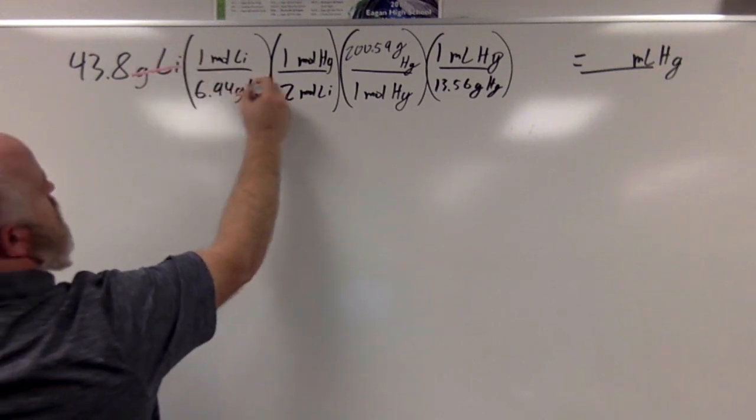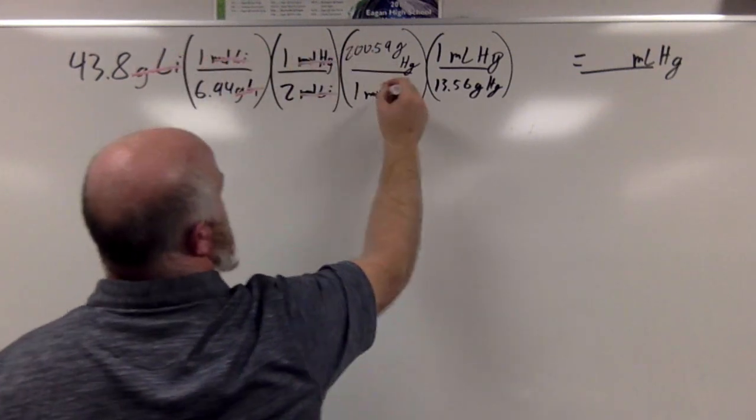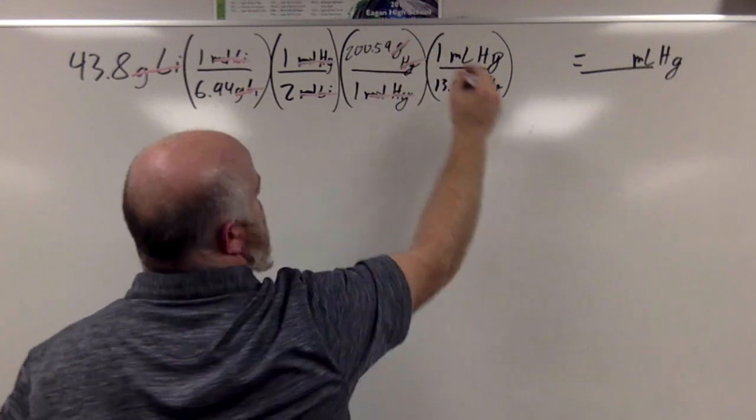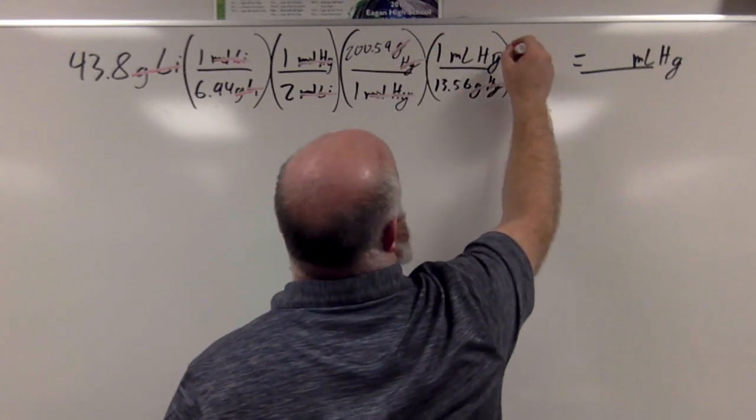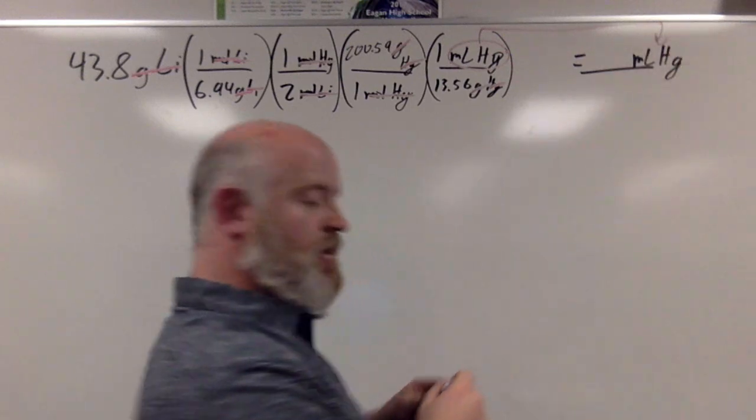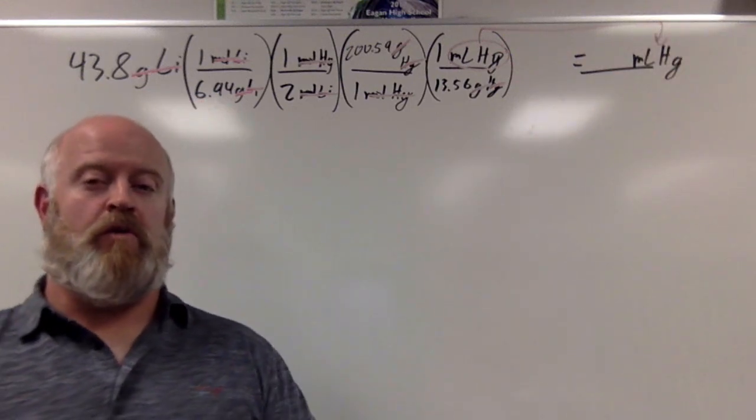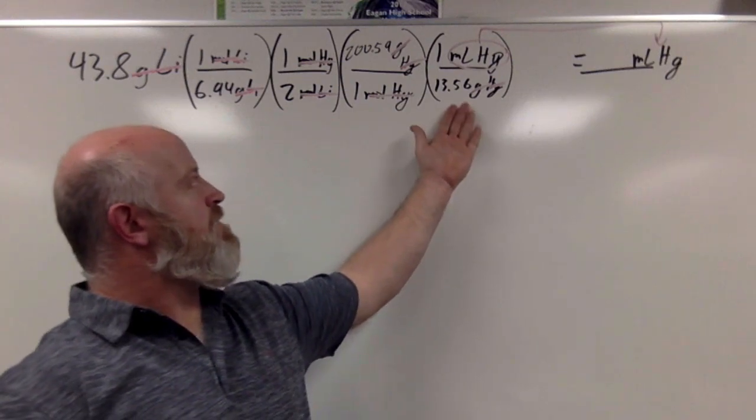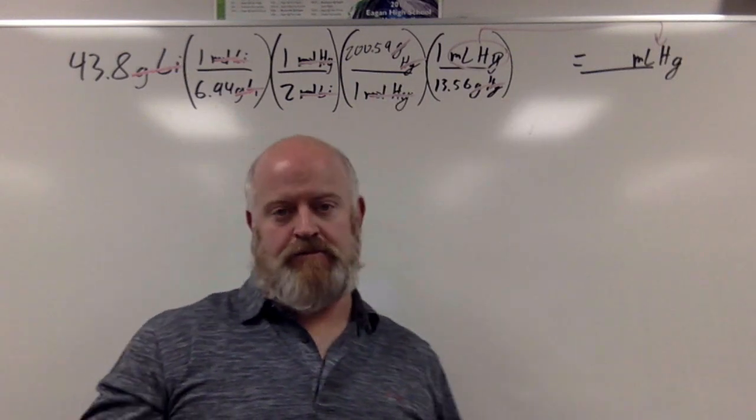Grams of lithium cancels. Moles of lithium cancels. Moles of mercury cancels. Grams of mercury cancels. We're left with milliliters of mercury, which matches what we're looking for. So notice, it's no new math. We just need to know how to add in a step for density to solve for that.